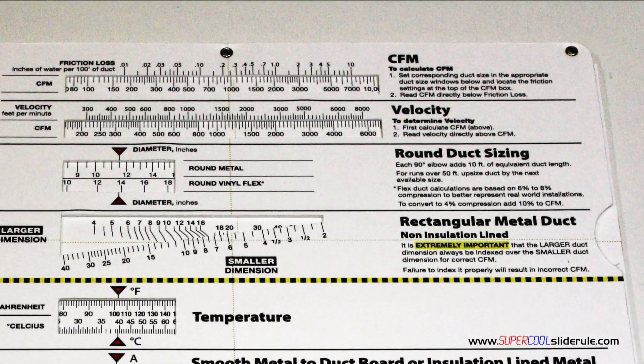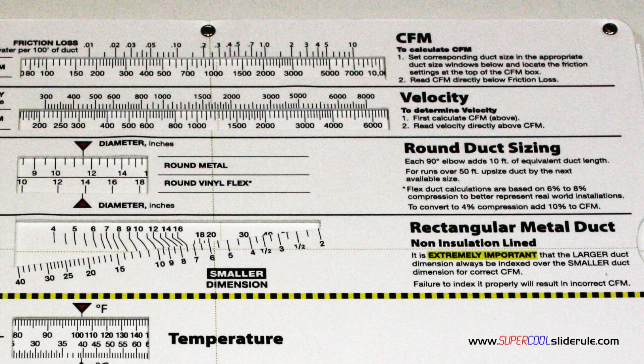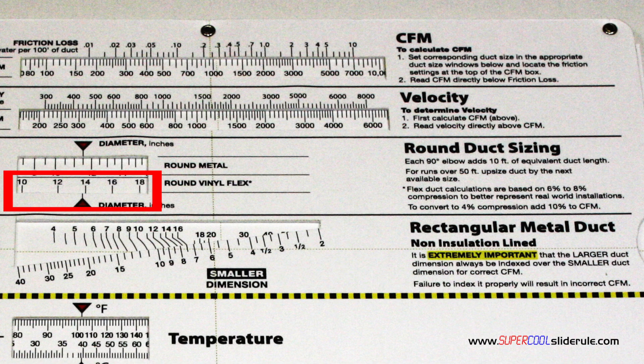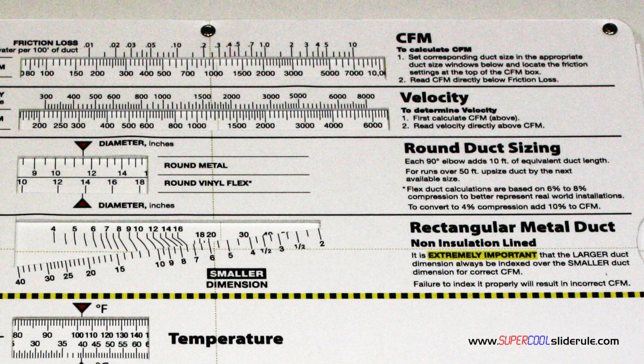We go to this area on the duct calculator and select the window that we will need. This one is used for round metal, this one here is for flexible duct, and finally this one here is for rectangular duct. In this example, we will be using flexible duct.